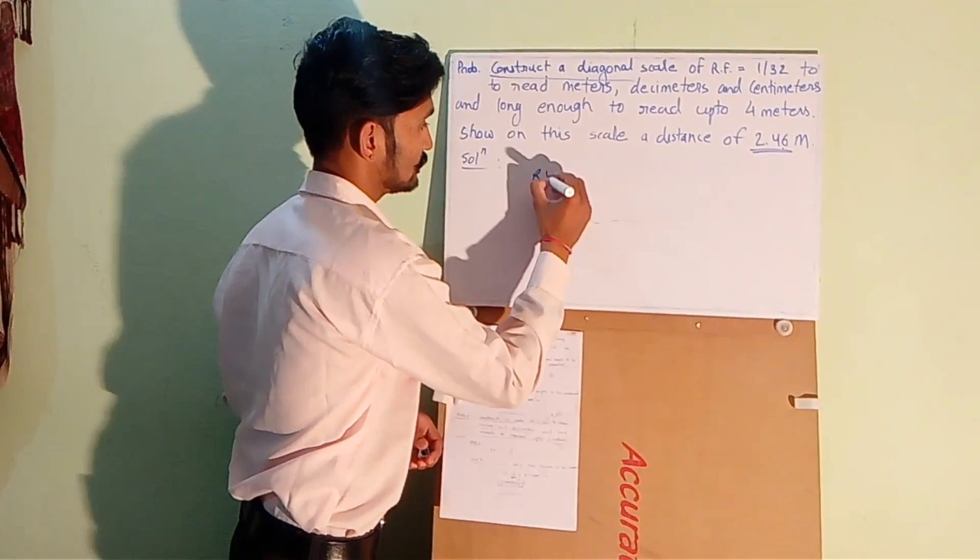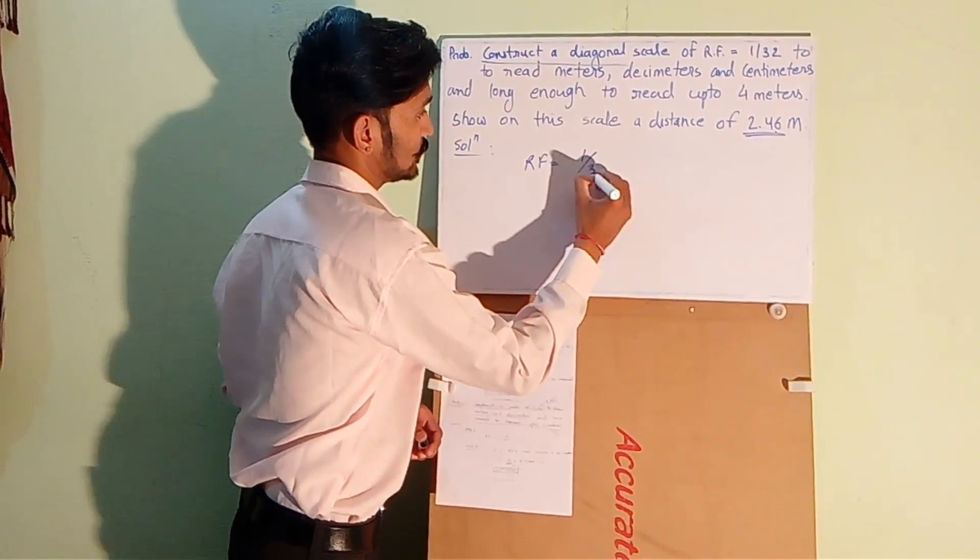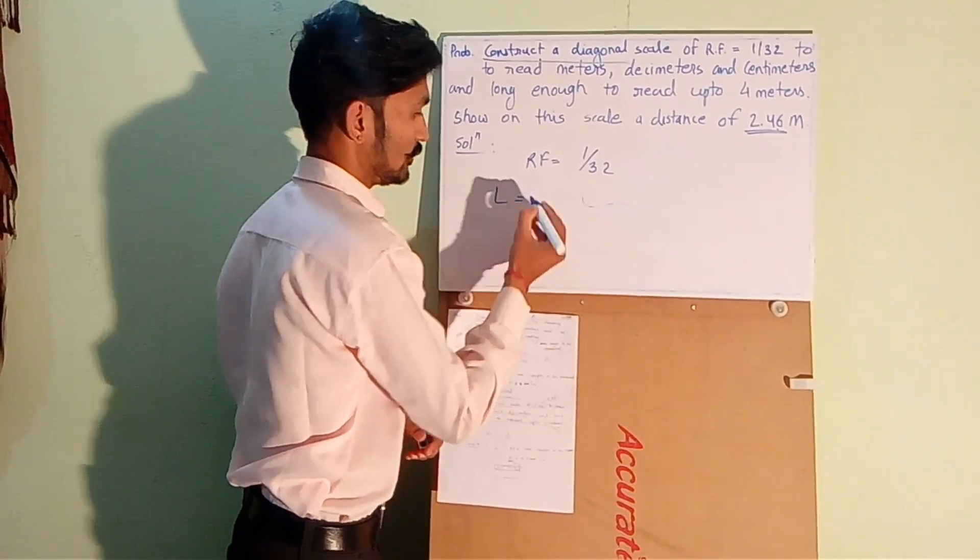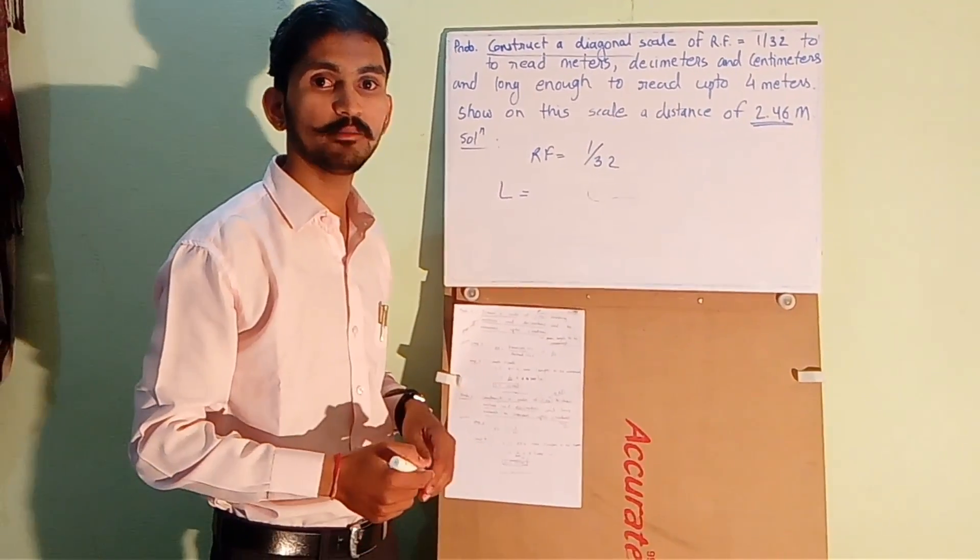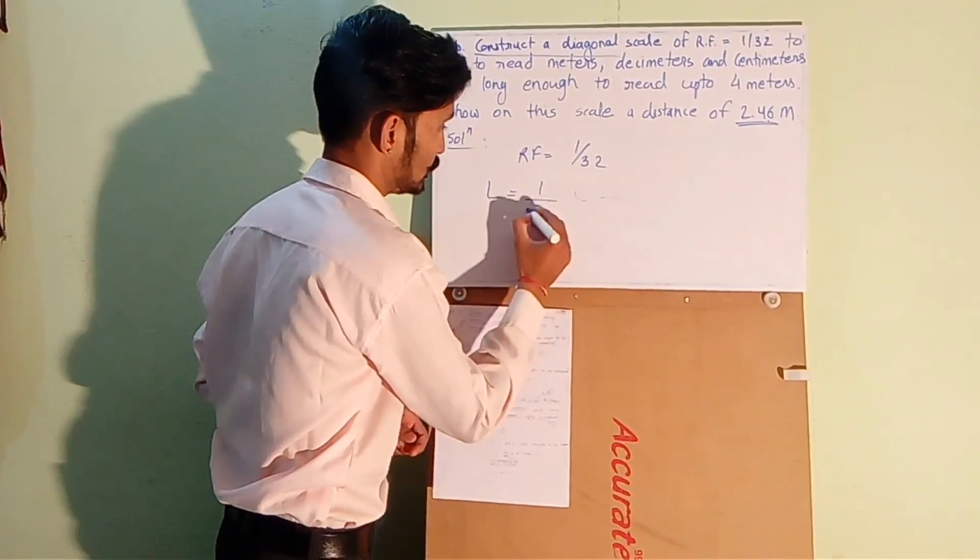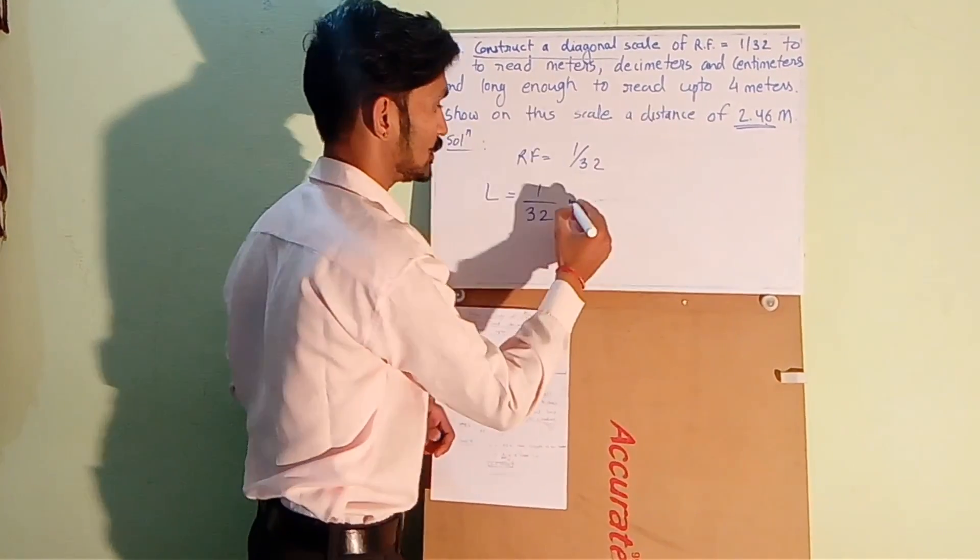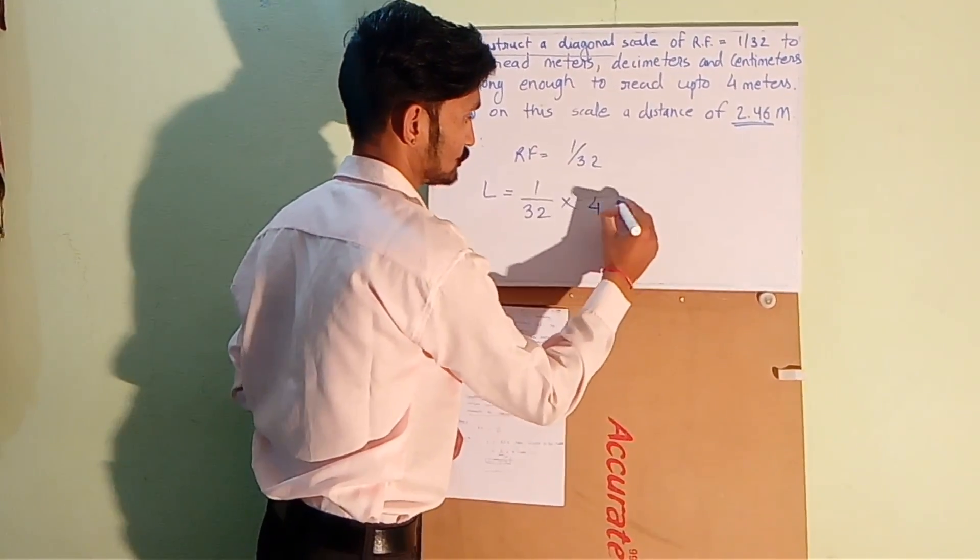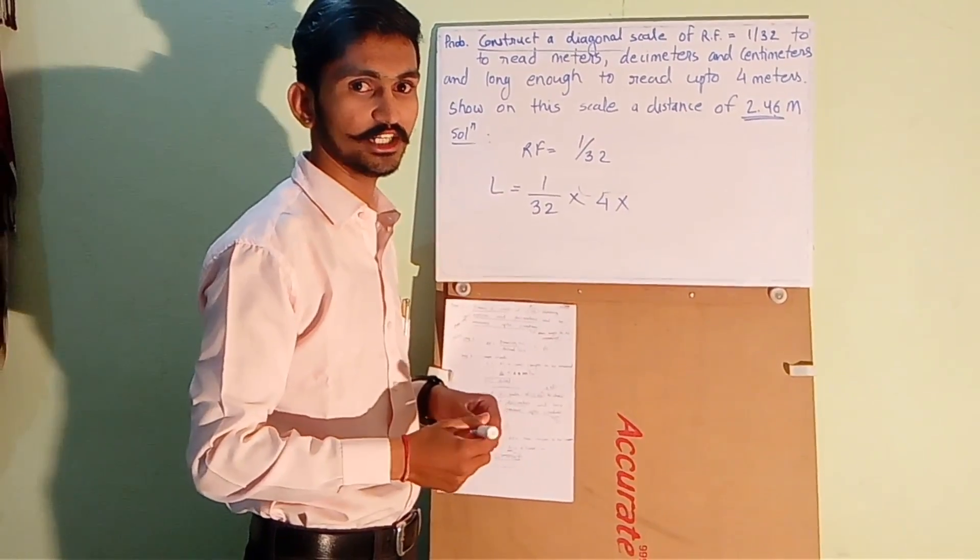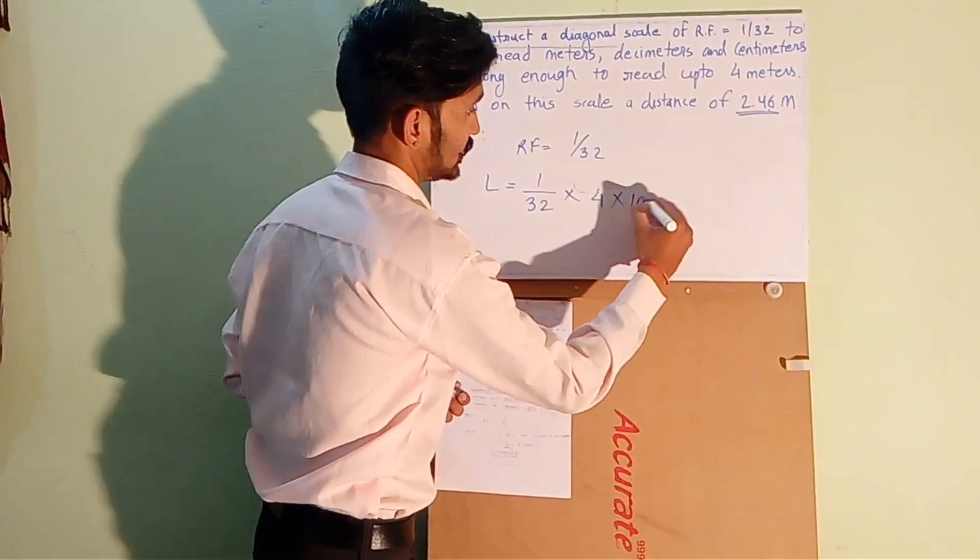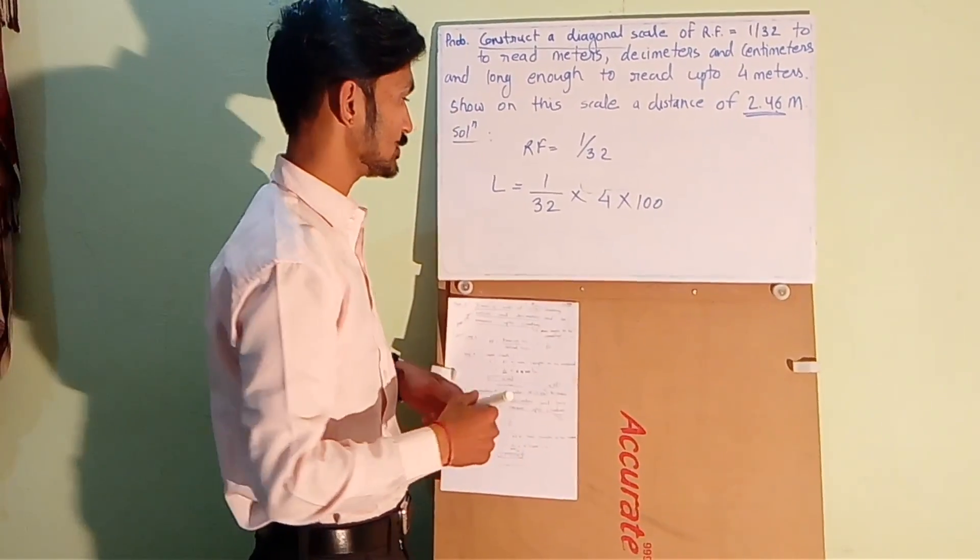We have RF which is 1 is to 32. We know how to calculate the length of the scale, very simple. RF multiplied by maximum length to be measured. RF is 1 by 32, maximum length to be measured is 4 meters. And we always want length of the scale in centimeters, so we convert meter into centimeter, multiply by 100.